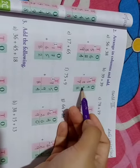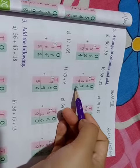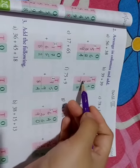39 plus 39. 9 plus 9 is 18, write 8 and 1 is the carry over. 3 plus 3 is 6, 6 plus 1 is 7.